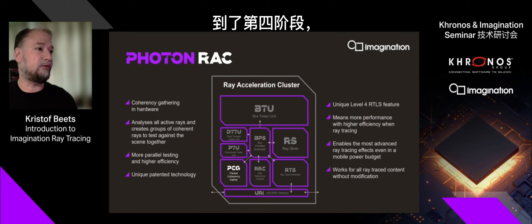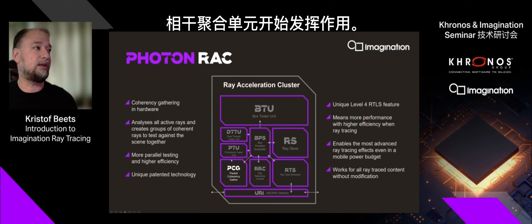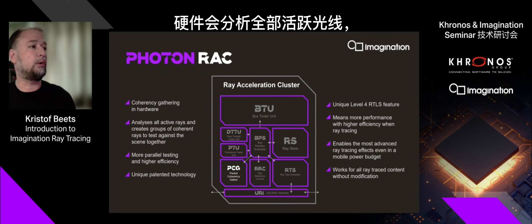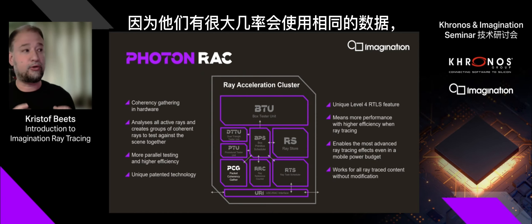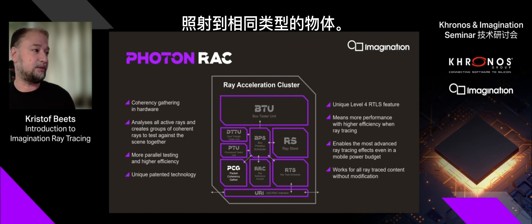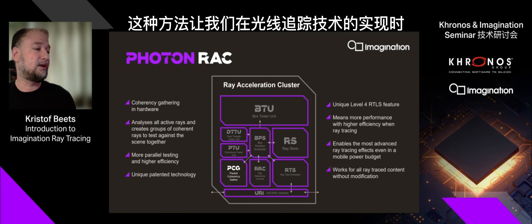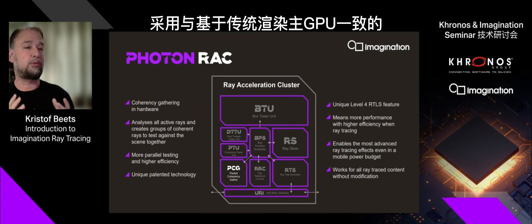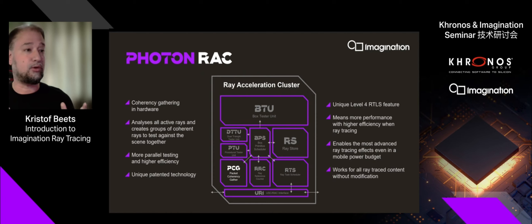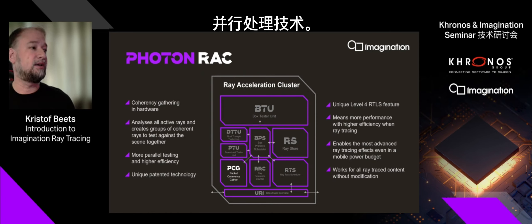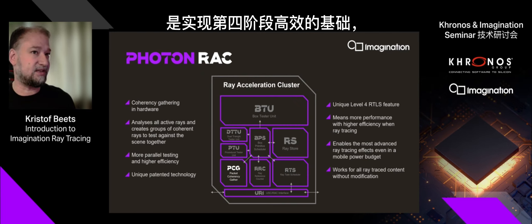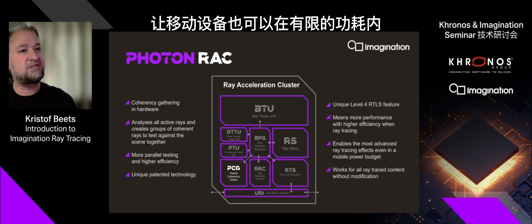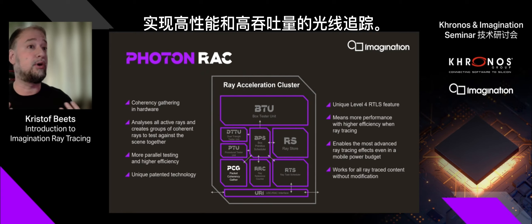The final magic — level four — is the packet coherency gathering unit. In hardware, we analyze all the active rays and create groups or bundles of rays that follow similar paths in the scene, that are very likely to use the same data and hit the same kinds of objects. That really allows us within ray tracing to deploy the same kind of parallelism techniques as the host GPU uses for traditional rendering. This very parallel, unique patented approach is what enables that level four of efficiency.